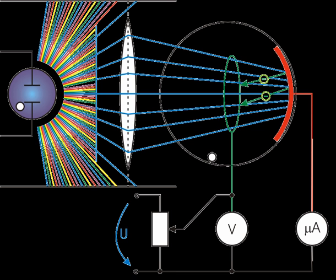Video camera tubes in the early days of television used the photoelectric effect. For example, Philo Farnsworth's image dissector used a screen charged by the photoelectric effect to transform an optical image into a scanned electronic signal.